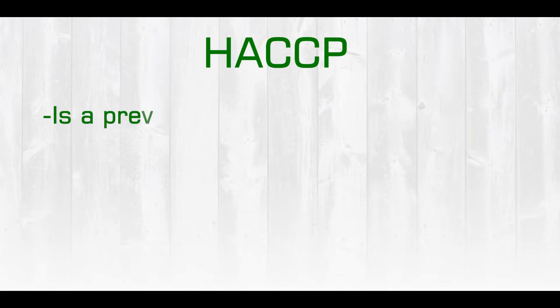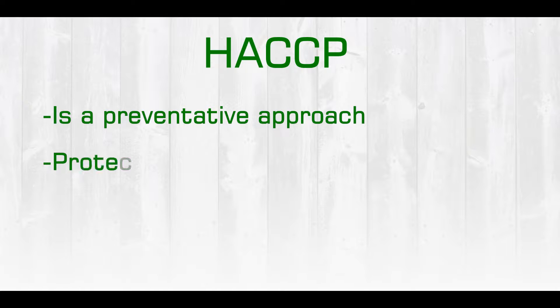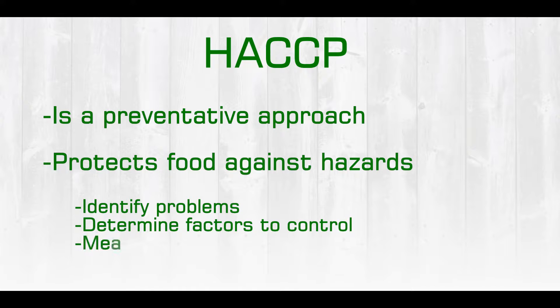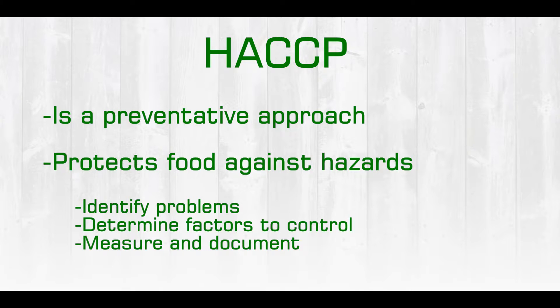HACCP is very much a preventative approach to food safety. We need to protect the food against potential hazards, which include biological, chemical, or physical. We can protect the food against these hazards by first identifying food safety related problems related to the product or the processes, then determining specific factors that can be controlled to prevent these problems from occurring, and establishing a system that can measure and document whether or not these factors are being controlled properly.